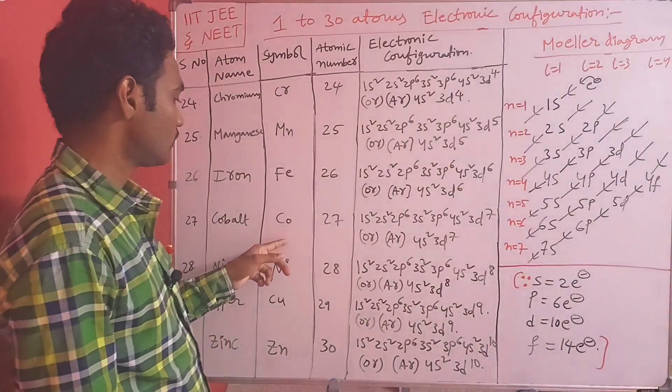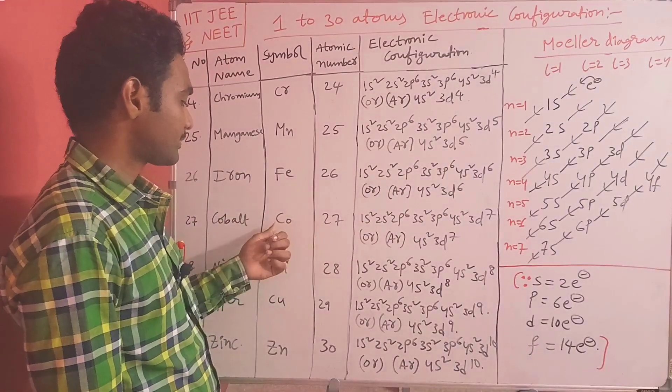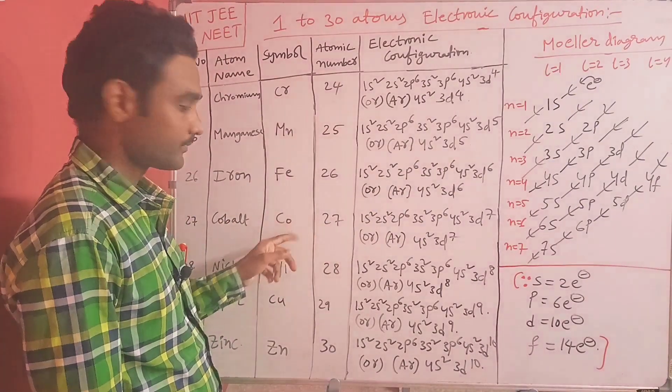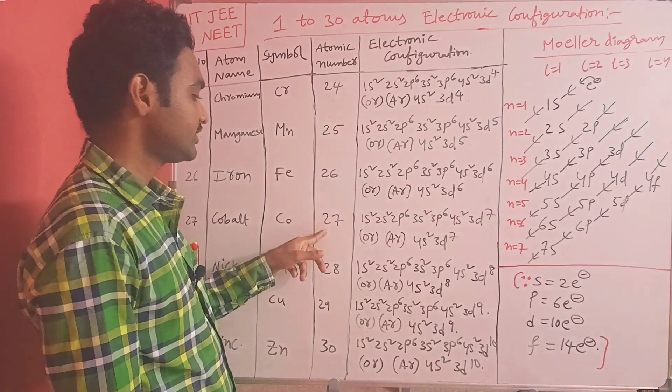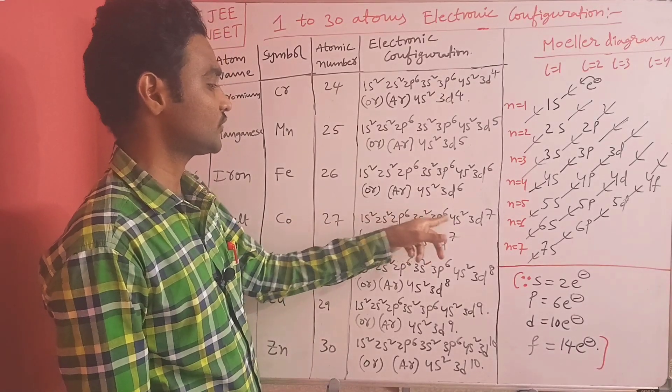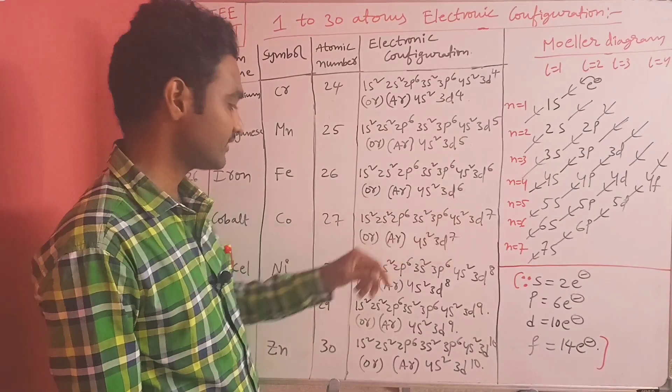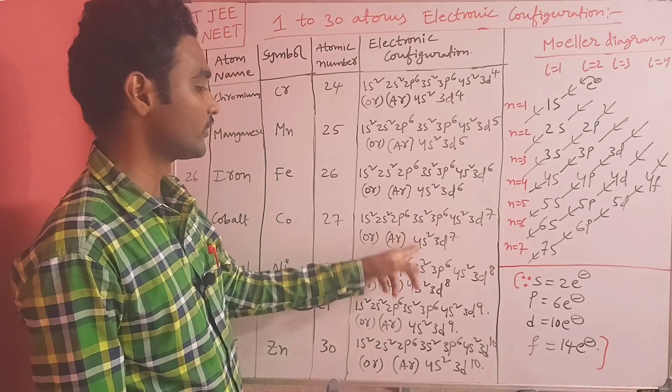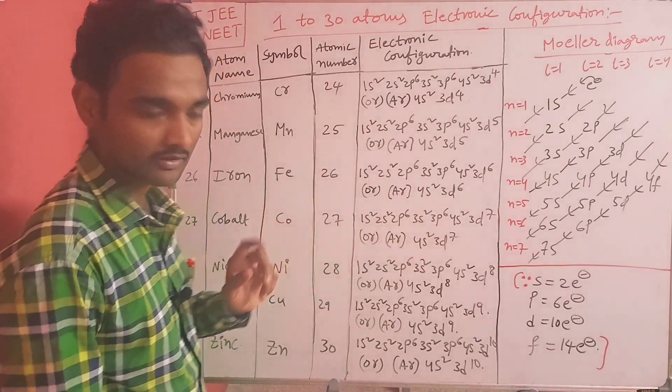Cobalt (Co), atomic number 27: 1s2 2s2 2p6 3s2 3p6 4s2 3d7, overall [Ar] 4s2 3d7.